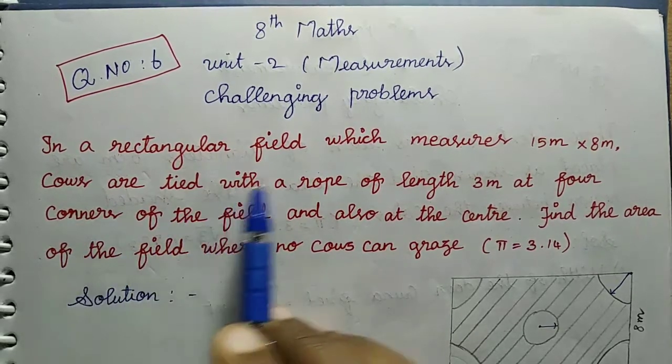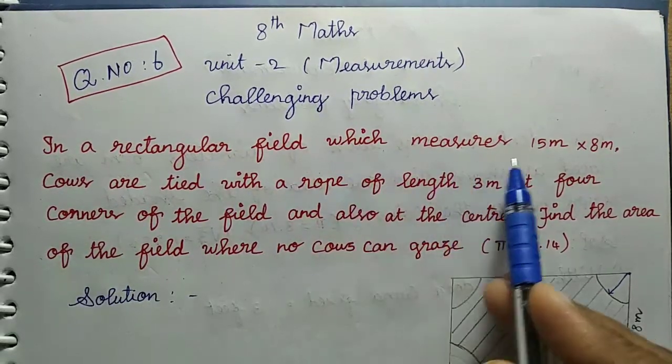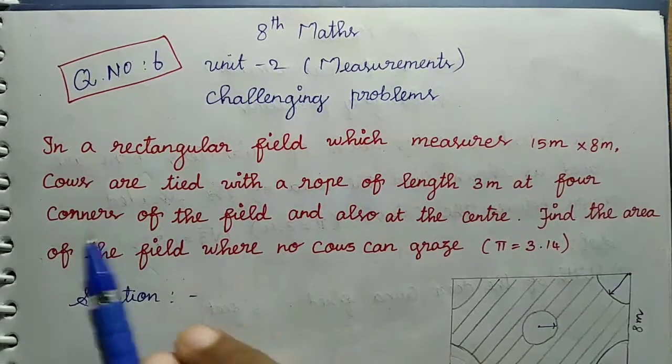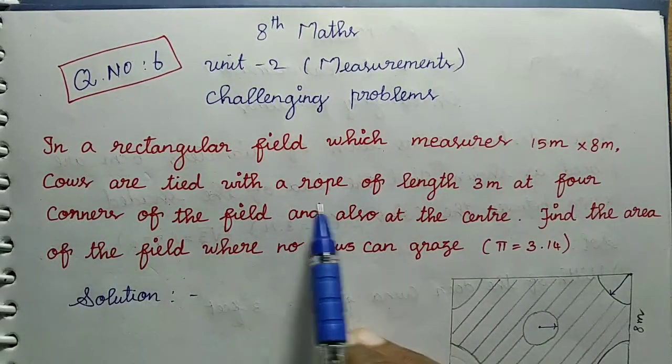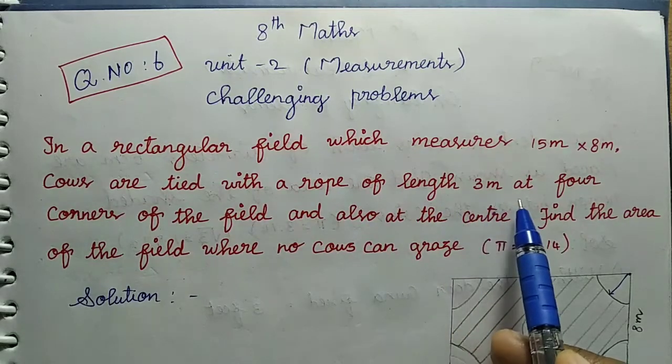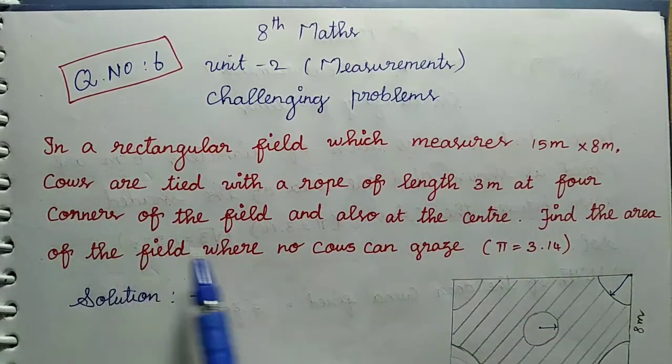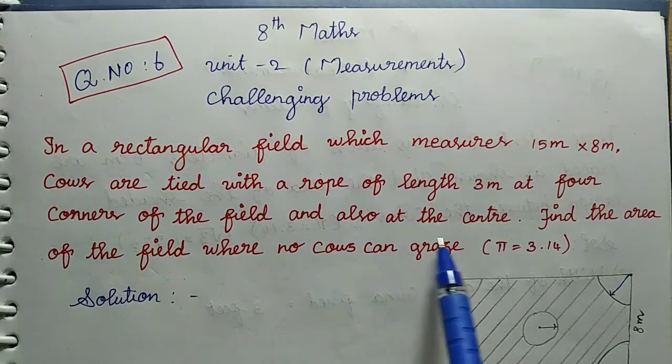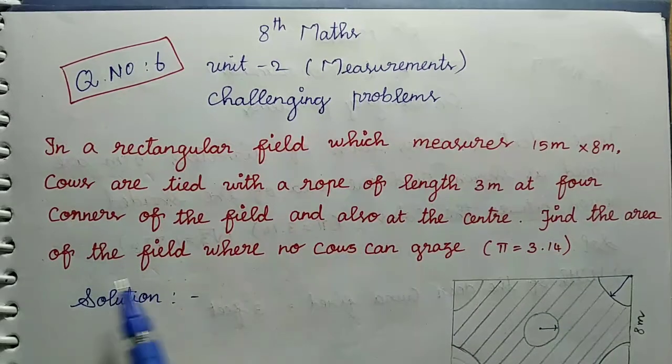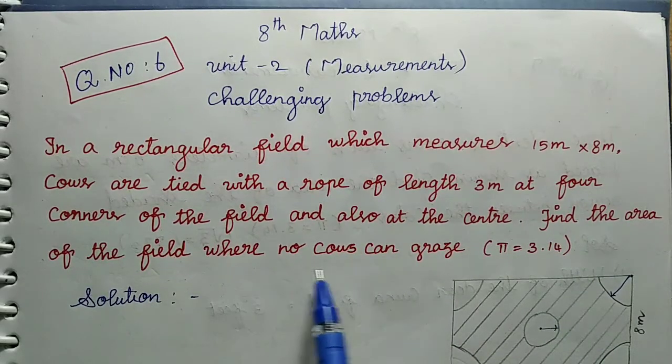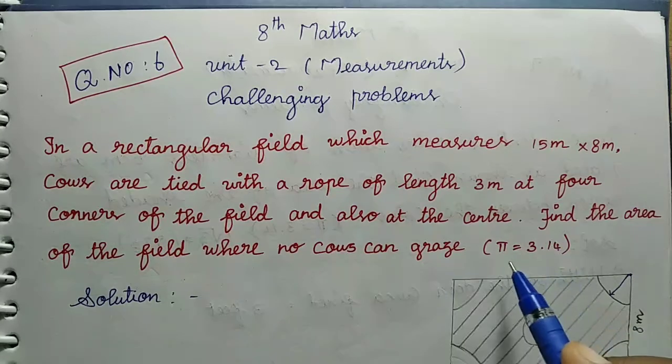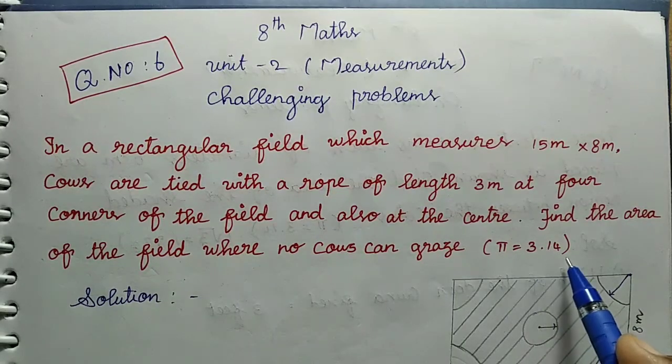In a rectangular field which measures 15 meter into 8 meter, cows are tied with a rope of length 3 meter at four corners of the field and also at the center. Find the area of the field where no cows can graze. Here pi is equal to 3.14.